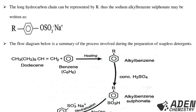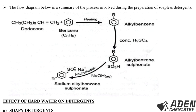The long hydrocarbon chain C13H27 can be represented by R (an alkyl group). Thus, sodium alkyl benzene sulfonate may be written as R–benzene–SO3–Na+ or K+. The full diagram is a summary of the preparation process: the alkyl group represented as R linked to the benzene ring, then the sulfonate group, then the sodium or potassium ion.